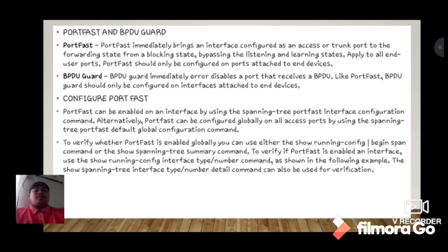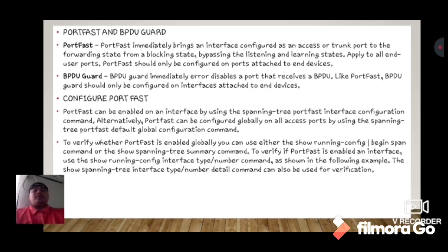Alternatively, PortFast can be configured globally on all access ports using the spanning-tree portfast default global configuration command. To verify whether PortFast is enabled, use either the show running-config begin span command or the show spanning-tree summary command. To verify PortFast on a specific interface, use the show running-config interface type number command or the show spanning-tree interface type number detail command.